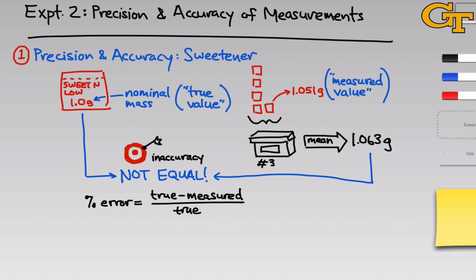Dividing by the true value brings the inaccuracy difference typically between 0 and 1. Because we don't care whether the measured value is greater than or less than the true value, we can take the absolute value to get a positive result. Then, to make it a percentage, we multiply by 100. So percent error falls between 0 and 100%, with 0% being perfect and 100% or higher being really bad.